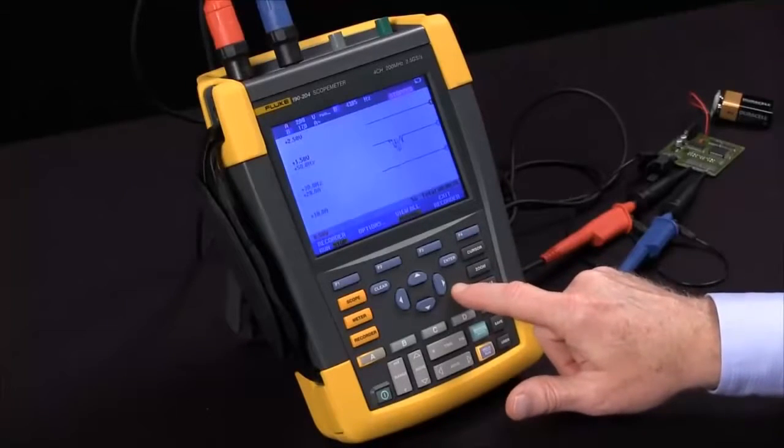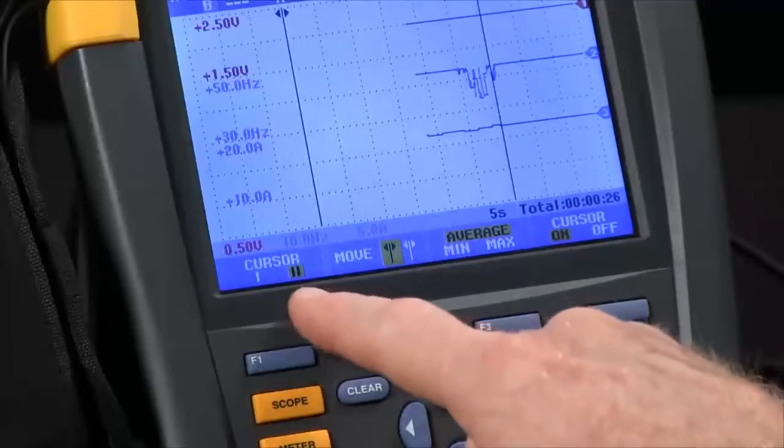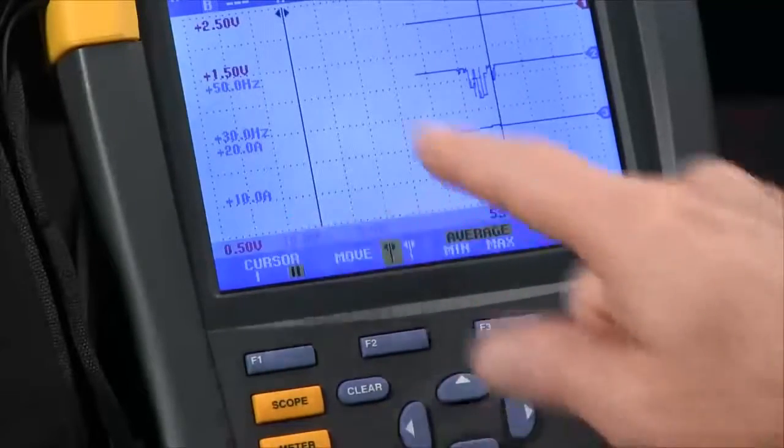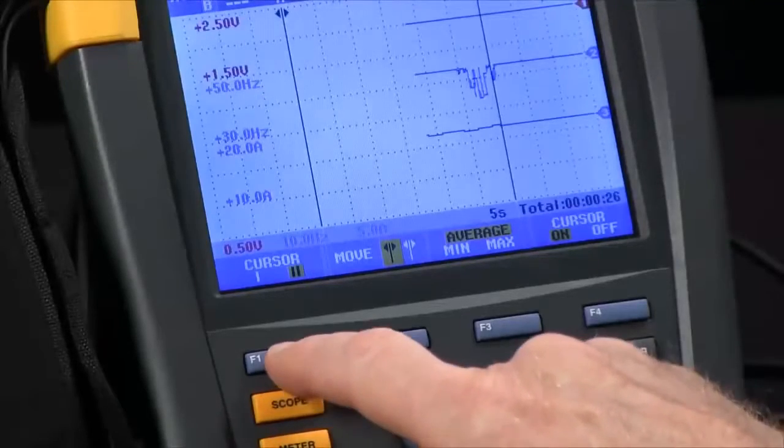When it comes to analysis, I might want to turn on a cursor. We start off with two cursors that give us a delta between the two positions. I want to choose a single cursor by selecting F1.